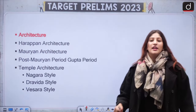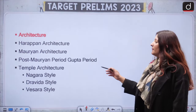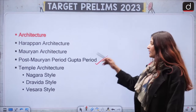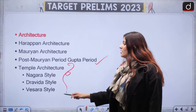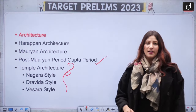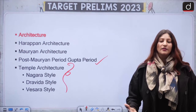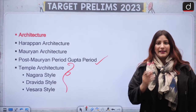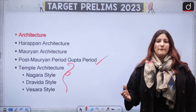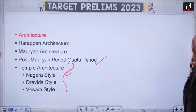Let's talk about Architecture. Harappan architecture is very important, as well as modern architecture. In the post-modern and pre-Gupta period, we have Temple Architecture. Know about the styles — Nagara, Dravida, and Vesara. Know which temple was constructed in what style, the characteristic features, examples of these temples, and their time span.